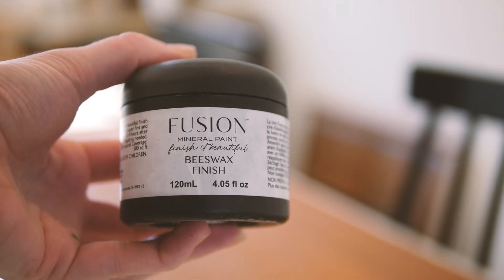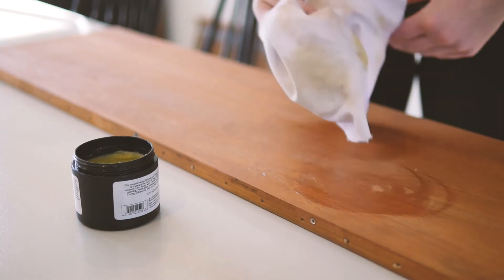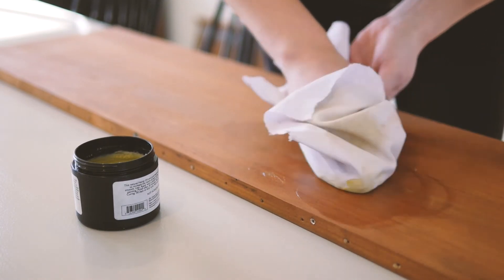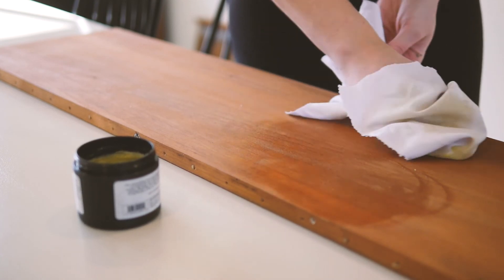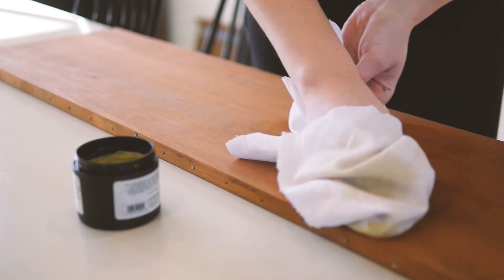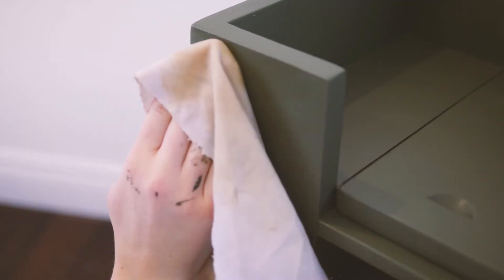After everything has dried for a good amount of time, I'm going to apply the beeswax finish by Fusion Mineral Paint, and I'm just going to apply that with a clean cloth. After 30 minutes I'm going to rub off all the excess. I put the beeswax on both the wood and the painted surfaces.